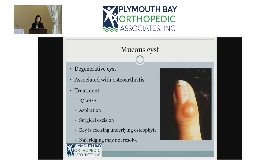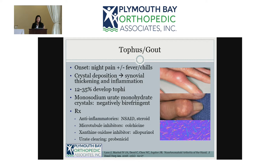It is important to explain to patients that the nail deformity may not improve after surgery. Regarding gout: this picture shows tophi that can occur in the fingers from uncontrolled gout. Gout is a crystalline inflammatory arthropathy, and if left untreated or undertreated you can develop these tophi. You can actually see the white crystal deposits under the skin. If they get large enough, tophi can erode through the skin and increase the risk of infection.